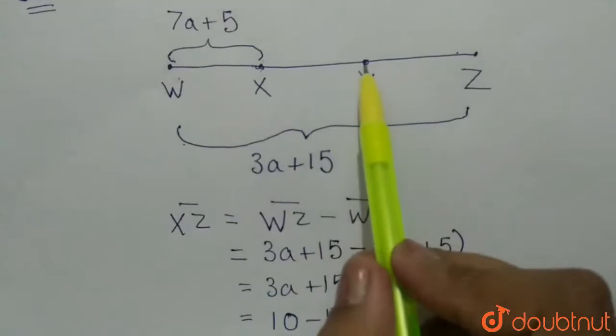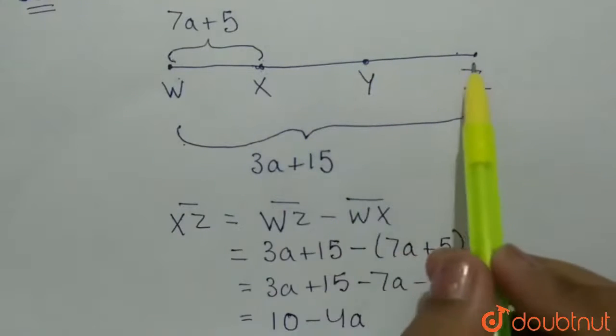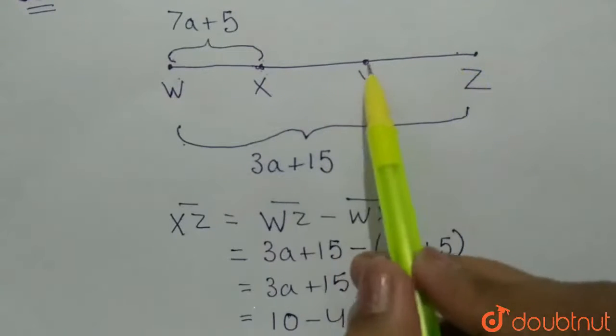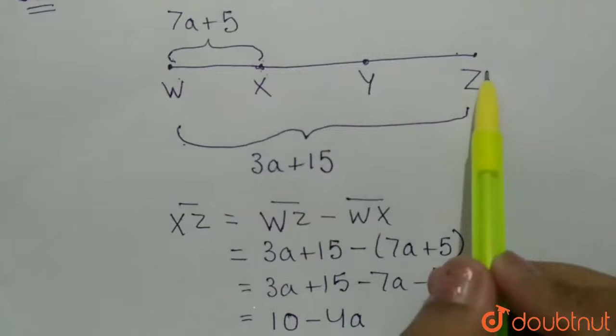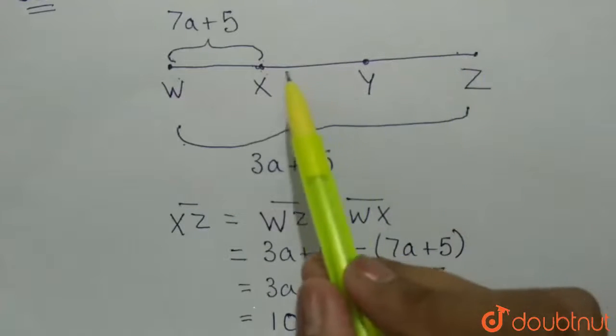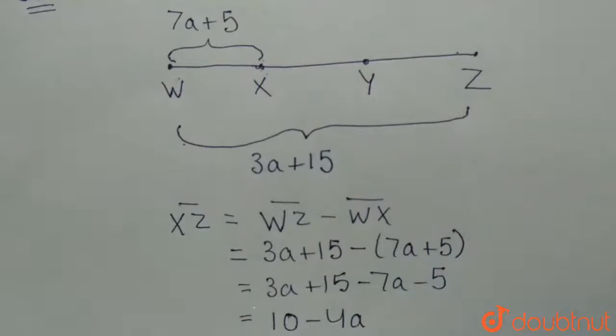We are given that Y is the midpoint of XZ. So, XY and YZ will be equal, which will be equal to half of the value of this XZ.